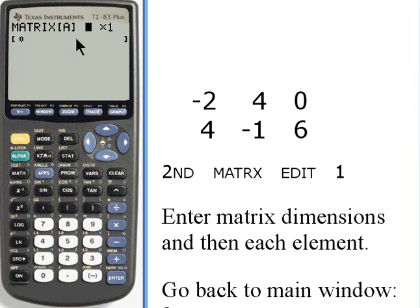And now the first step is going to be to enter the dimensions of the matrix and then each of the elements. So this is a 2 by 3 matrix. I'll press the 2 and then enter, 3 and then enter. The matrix has now changed size, it's now a 2 by 3 matrix, and we'll enter each of the elements.